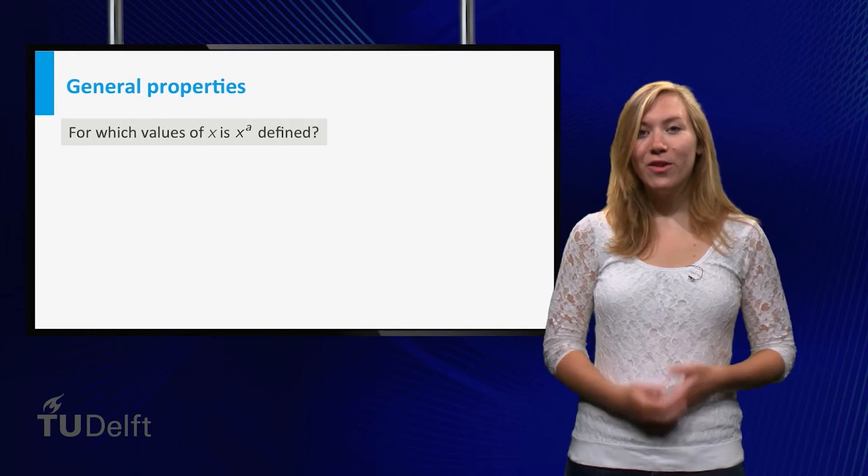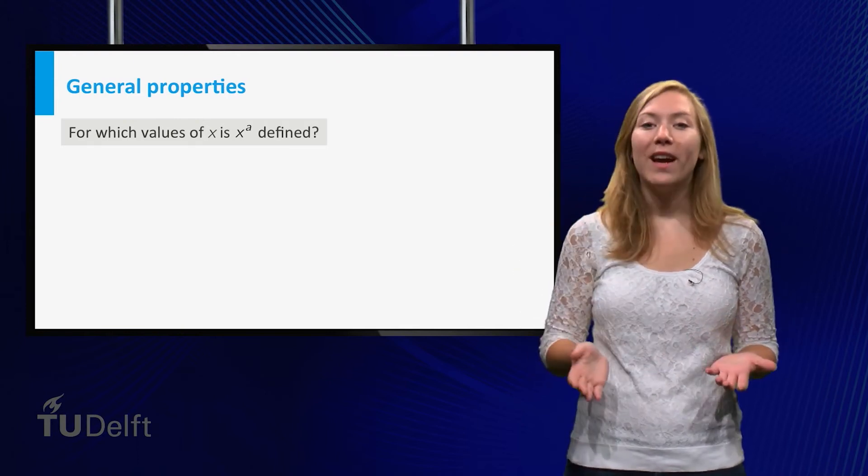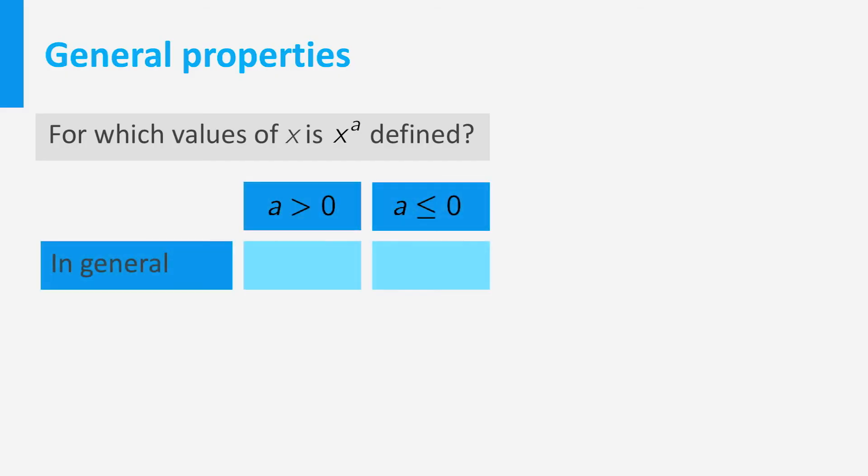The first question is, for what x values are they defined? Well, in general, if a is larger than 0, then the function is defined for x larger than or equal to 0. If a is smaller than or equal to 0, then we have to exclude x equal to 0.